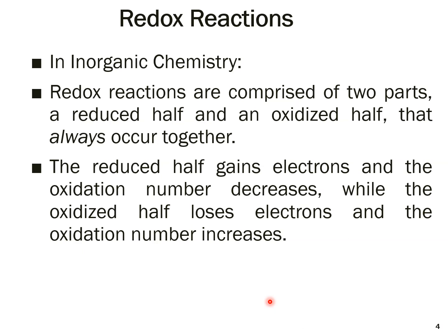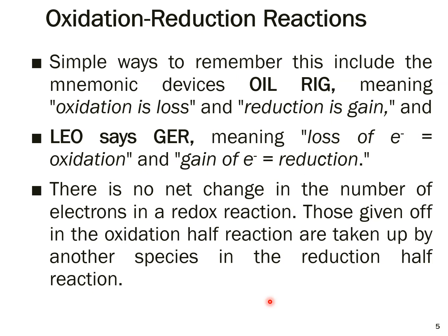We discussed about redox reactions briefly in the previous lecture. To quickly summarize: in inorganic chemistry, redox reactions comprise two parts — the reduced half and the oxidized half. These always occur together. A common mnemonic is OIL RIG: oxidation is loss, reduction is gain. Similarly, LEO says GER: loss of electrons is oxidation, gain of electrons is reduction. There is no net change in the number of electrons in a redox reaction.